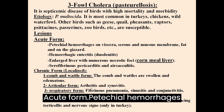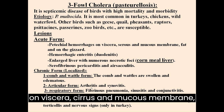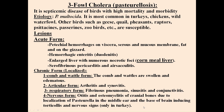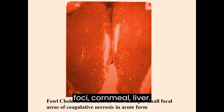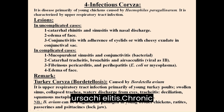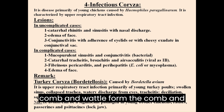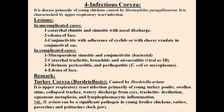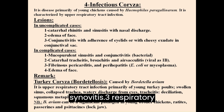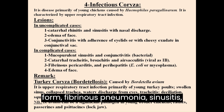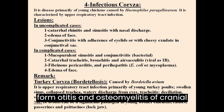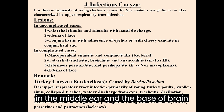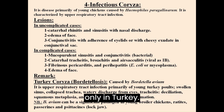Lesions of Fowl Cholera: Acute form — petechial hemorrhages on viscera, serous and mucous membranes, fat and gizzard; hemorrhagic enteritis and duodenitis; enlarged liver with numerous necrotic foci (cornmeal liver); serofibrinous pericarditis and airsacculitis. Chronic localized form: 1. Comb and wattle form — swollen and edematous. 2. Articular form — arthritis and synovitis. 3. Respiratory form — fibrinous pneumonia, sinusitis and conjunctivitis. 4. Nervous form — otitis and osteomyelitis of cranial bones due to localization of Pasteurella in the middle ear and base of brain, inducing torticollis and nervous signs (only in turkey).